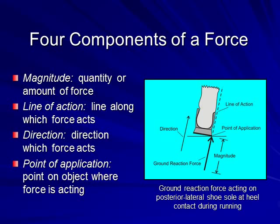In this example, we have a runner hitting the posterior lateral aspect of the shoe heel at ground contact, when his heel initially hits the ground in a rear-foot striking runner. We have the magnitude of ground reaction force, the line of action, the direction which is upward, and also the point of application, which is on the posterior lateral corner of the heel. The point of application is important because it will determine where along the shoe heel the force hits, and will determine the forces acting within the foot as a result of those forces.